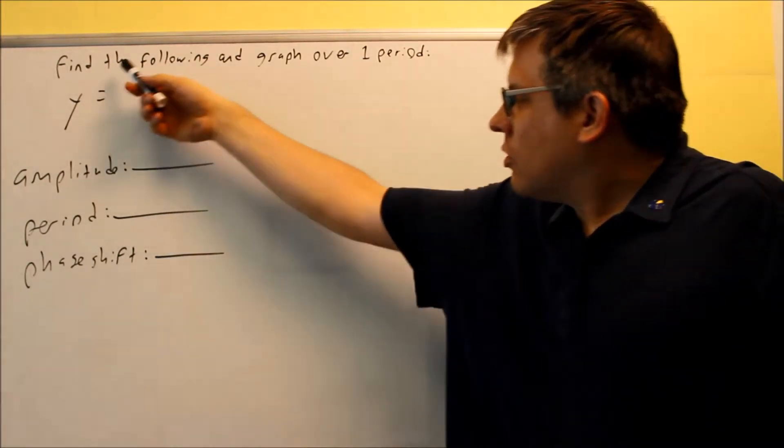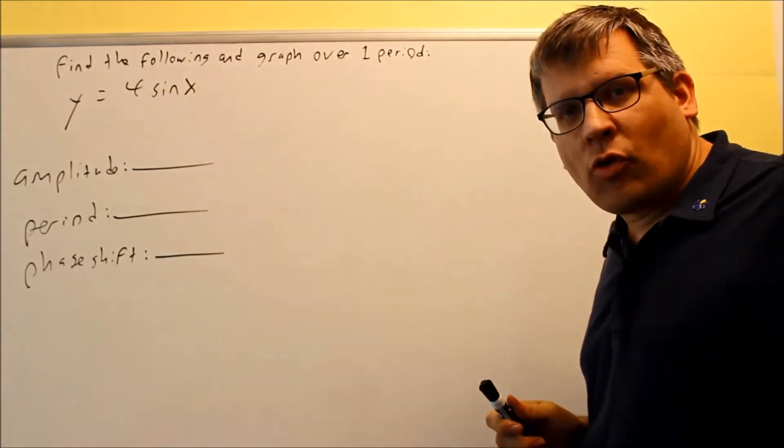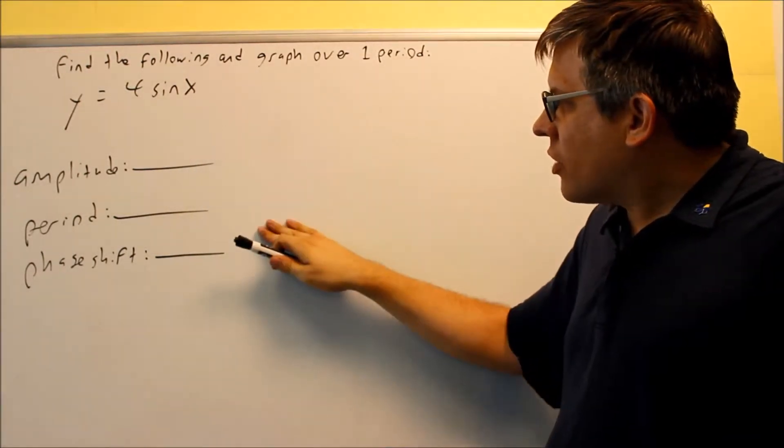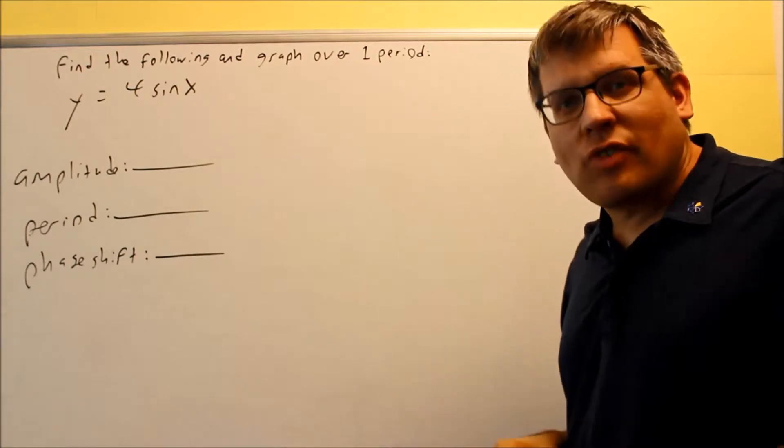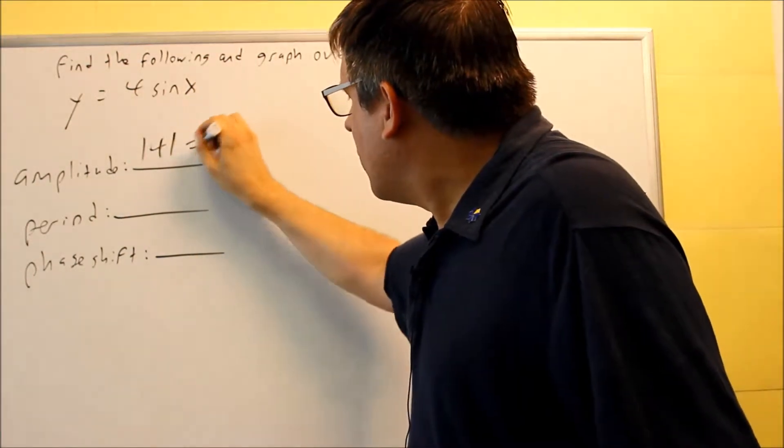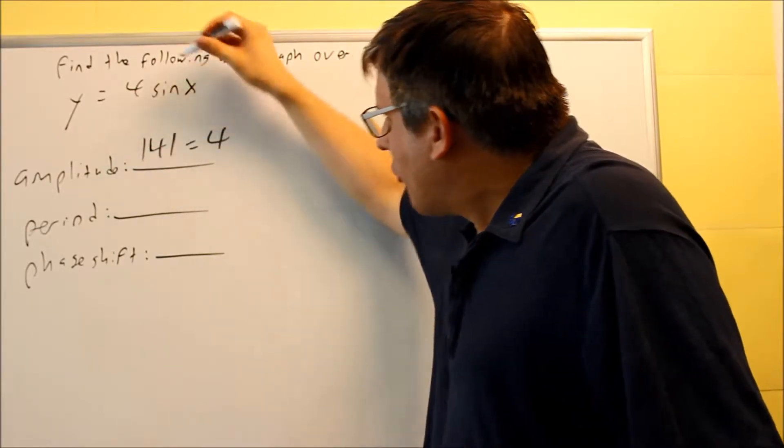So, the original equation I have is y equals 4 sine x. What you're going to do to answer these questions is, first of all, the amplitude, we have the absolute value of 4. That's what we're going to put for this one, and you get 4. The 4 came from this.